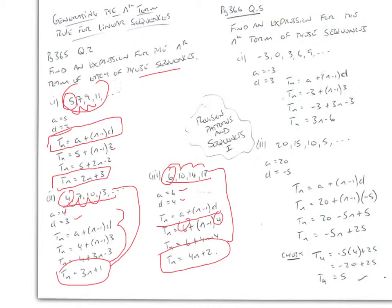Find an expression for the nth term of these sequences. This one starts with −3, 0, 3, 6, 9. Our first term a is −3 and our difference is +3: −3 + 3 = 0, + 3 = 3, and so on. Putting that into the formula gives Tn = 3n − 6.